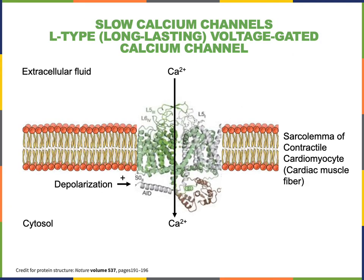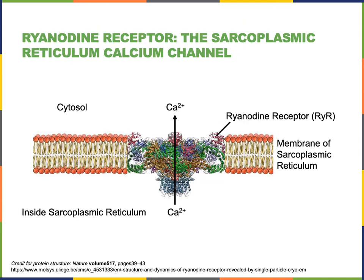During the plateau phase of the contractile cell action potential, calcium rushes into the cytosol from the extracellular fluid through L-type calcium channels. While calcium is entering the cell from the extracellular fluid through the L-type calcium channels, there is also calcium being released from inside the sarcoplasmic reticulum through ryanodine receptors.